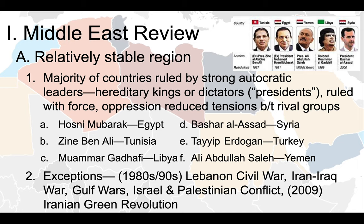That identity is one of relative stability due to the majority of countries being ruled by strong autocratic leaders — primarily either kings with hereditary rule, such as in Jordan and Saudi Arabia, or presidents, though those presidents are in quotation marks because most are ruling as strong-armed dictators. There are elections and freedoms, but those freedoms are not always guaranteed as in more Western countries. We're seeing a lot of these rulers using oppressive tactics.